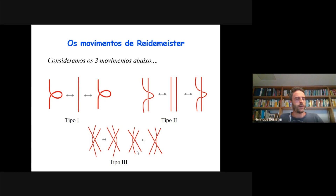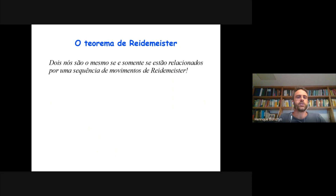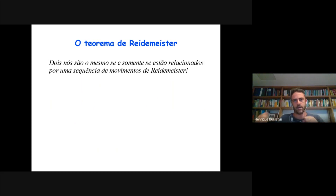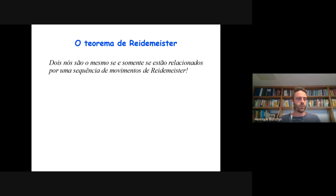São três movimentos extremamente simples. Mas o teorema de Reidemeister é um teorema bastante útil e bastante surpreendente que diz o seguinte: dois nós são equivalentes se e somente se eles estão relacionados por uma sequência finita desses movimentos de Reidemeister. Aqui está uma sequência de movimentos que relaciona a figura 8 ao seu simétrico espelhado — no caso da figura 8, esse nó e o seu simétrico espelhado são equivalentes.